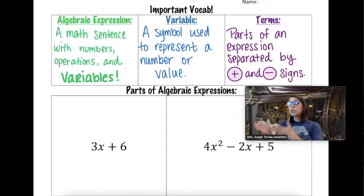So here's an example of two different algebraic expressions, 3x plus 6 and 4x squared minus 2x plus 5. We're going to spend time going over each of these and highlighting the important vocabulary and parts in each expression.